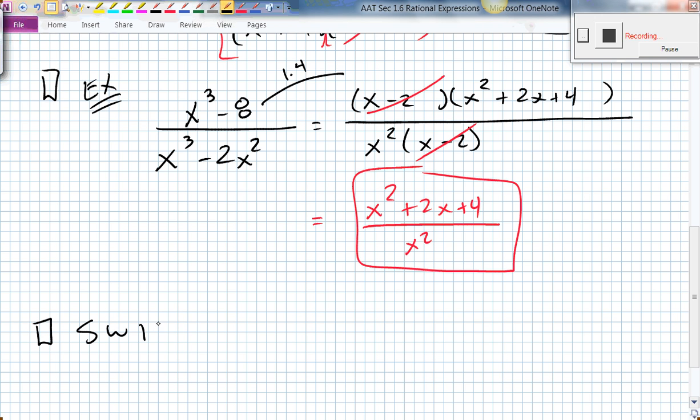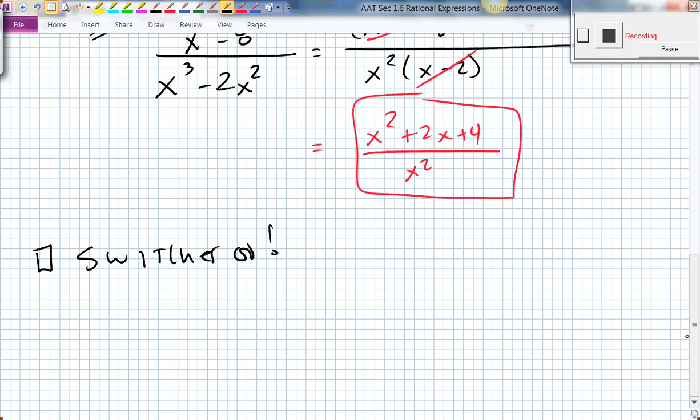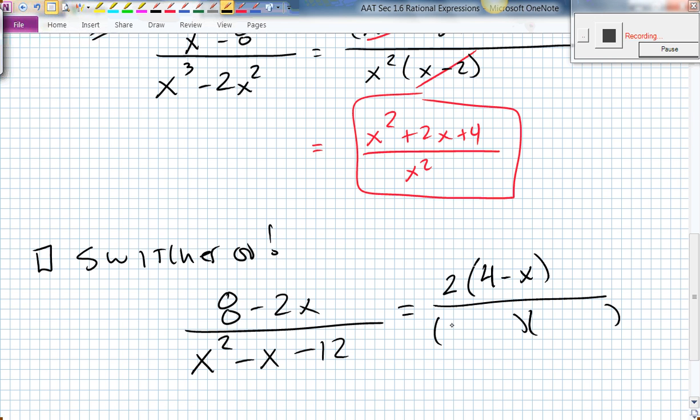Next, I'm going to talk about the switcheroo. Here's what I mean by that. If I gave you 8 minus 2x all divided by x squared minus x minus 12. The top becomes 2 times 4 minus x. The bottom becomes x and x, 3 and 4, negative and positive. So it looks like you want to cancel this piece with this piece, but we can't do that unless we make one of them a negative 1. So now I can do that.